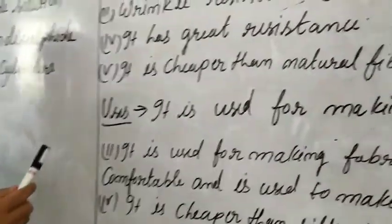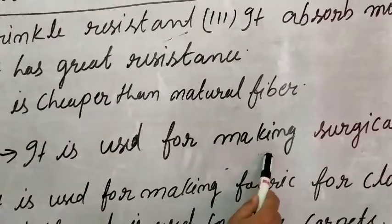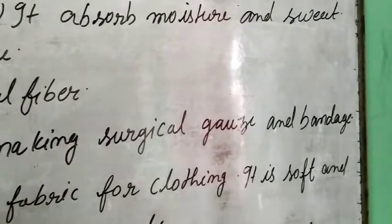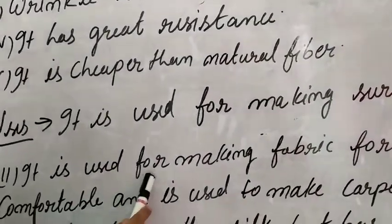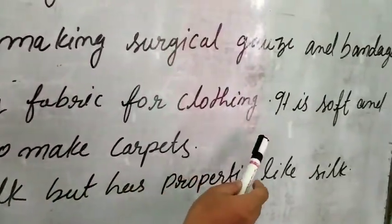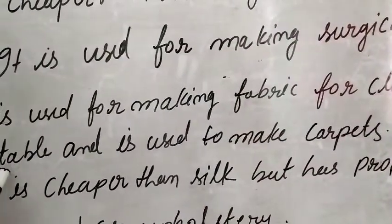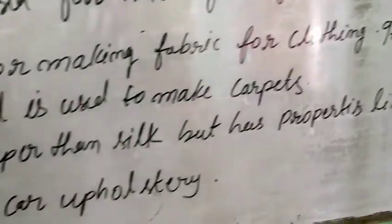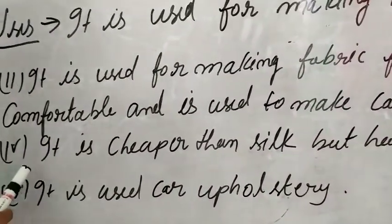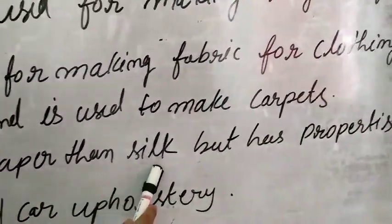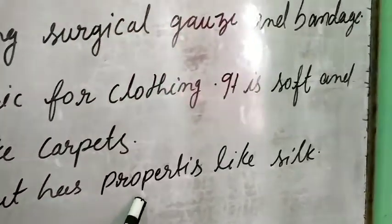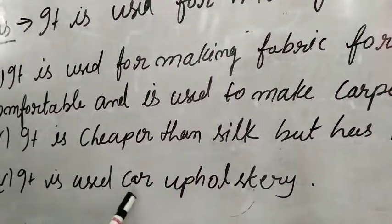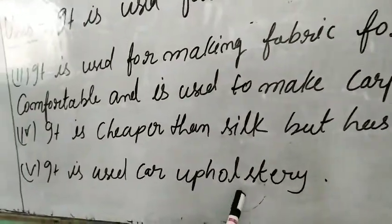Let's see the uses of Rayon. It is used for making surgical gadgets, gauze and bandages. It is used for making fabric for clothing. It is soft and comfortable and used to make carpets. It is cheaper than silk but has properties like silk. It is also used in car upholstery.